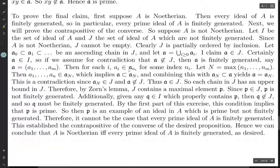Each of these generators must be in some Aₙᵢ for some index nᵢ. Choose n to be the maximum of these; then by inclusion all generators are in that particular Aₙ, so A is contained in Aₙ. But Aₙ is contained in A since A is the union of the Aᵢ's, so A equals Aₙ. This is a contradiction: we assumed A is finitely generated and proved A equals Aₙ, meaning Aₙ is finitely generated, contradicting that Aₙ is in J. Therefore A is in J, so each chain in J has an upper bound in J, and by Zorn's Lemma J contains a maximal element — call it P.